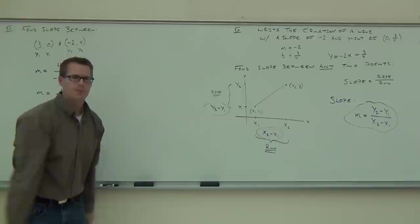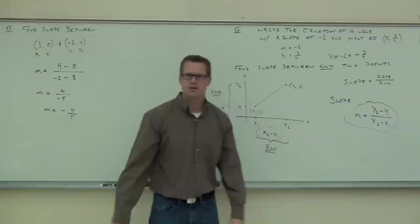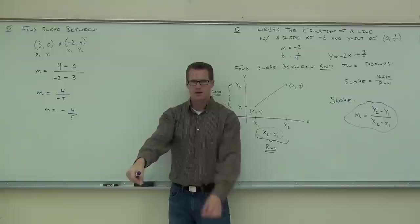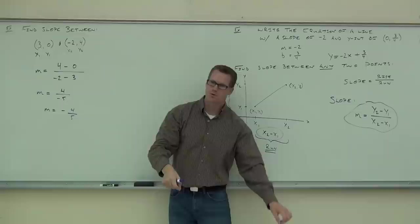This slope is negative, so it's going to be dropping as we go from left to right. What is our rise on this graph? We're going to be dropping 4 and then going to the right 5. That's how we go from point to point — down 4, over 5, down 4, over 5. It's like a staircase. That's how this line is sloped.